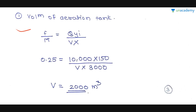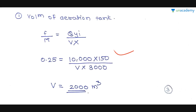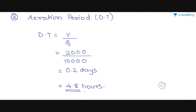First, let's calculate the volume of the aeration tank. We use the F/M ratio formula: F/M = Q·Yi / (V·X), where V is unknown. Substituting F/M = 0.25, Q = 10,000, Yi = 150, and X = 3000, we solve for V and get the volume of the aeration tank as 2000 m³.